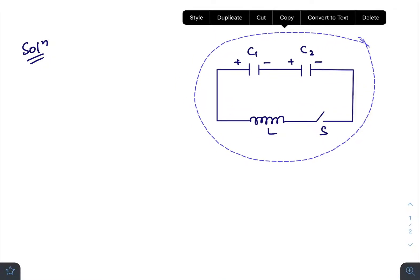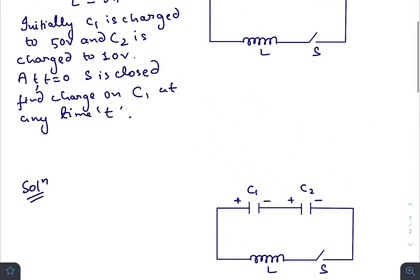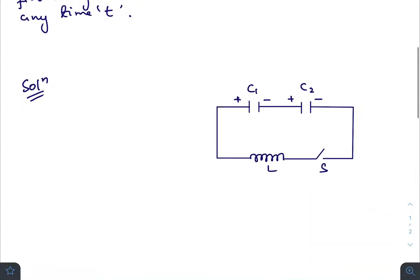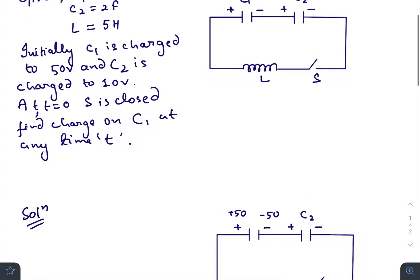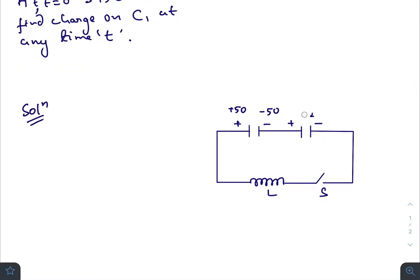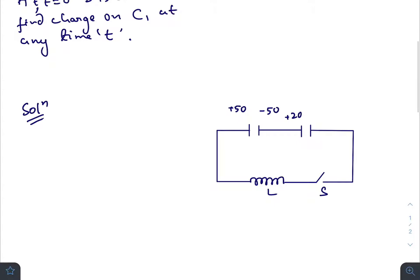Initially, the charge on capacitor C1 is plus 50 coulombs here and minus 50 here. On C2, it is plus 20 and here it is minus 20 coulombs. Suppose at any time t, q charge has left this plate of the capacitor.